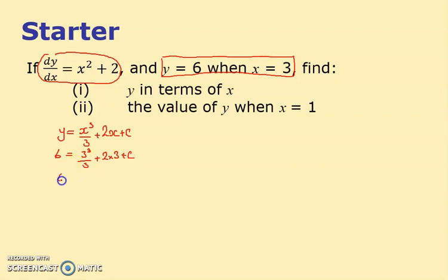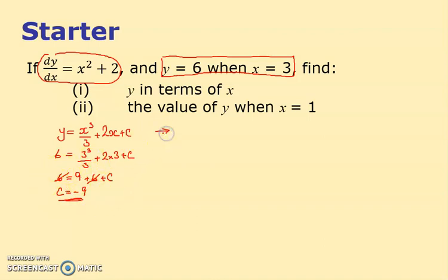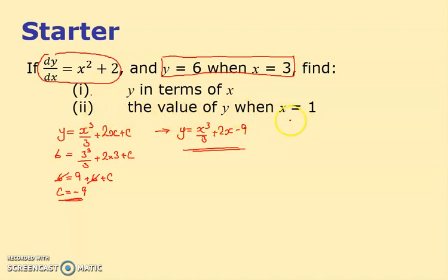So I'm going to do 3 cubed over 3 plus 2 lots of 3 plus c. That gives me: 6 equals 27 divided by 3 is 9, plus 6, plus c — that's 15. Moving the 15 to the other side gives c equals minus 9. So therefore my equation for part 1 is y equals x cubed over 3 plus 2x minus 9.